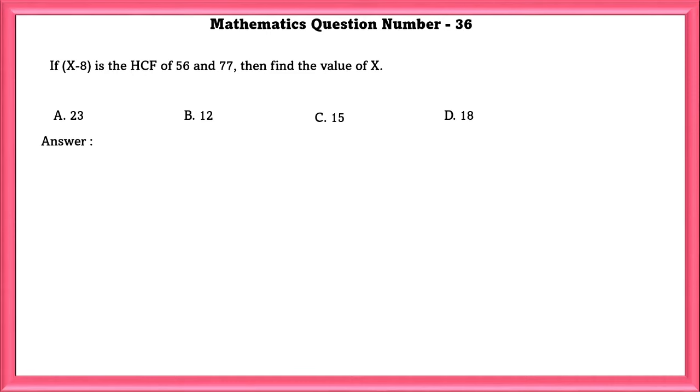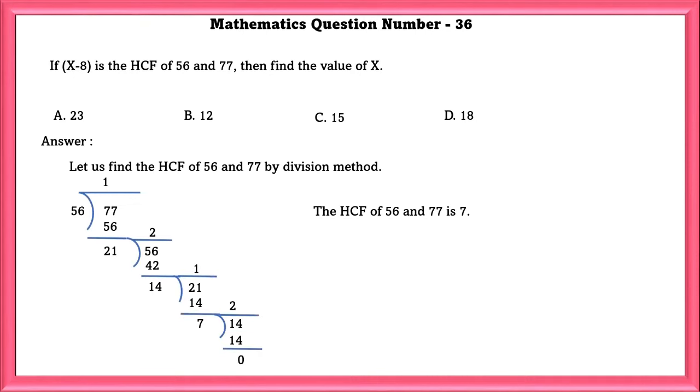Mathematics question number 36. If X minus 8 is the HCF of 56 and 77 then find the value of X. First let's find the HCF of these two numbers. If we find we will get 7 as the HCF. X minus 8 is the HCF of 56 and 77. So X minus 8 is equal to 7. From this X is equal to 15. 15 minus 8 is equal to 7.